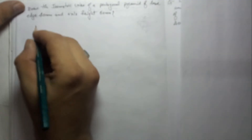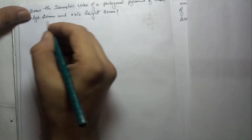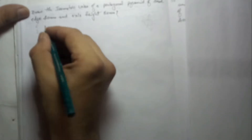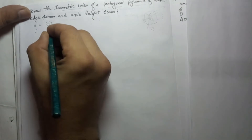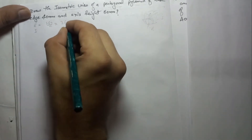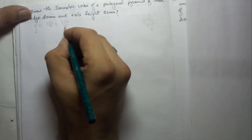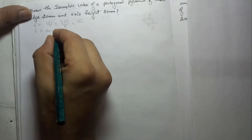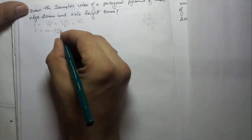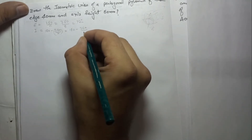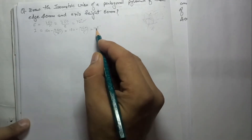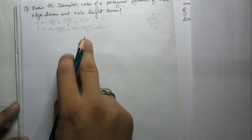First we have to draw the pentagon. Whenever we draw any polygon — n number of sides — there are two methods: external angle or internal angle. External angle formula is 360 divided by n. For a pentagon, 360 divided by 5 equals 72 degrees. Internal angle is 180 minus 360/n, so for pentagon that is 180 minus 72, which equals 108 degrees. Use either angle for any polygon.